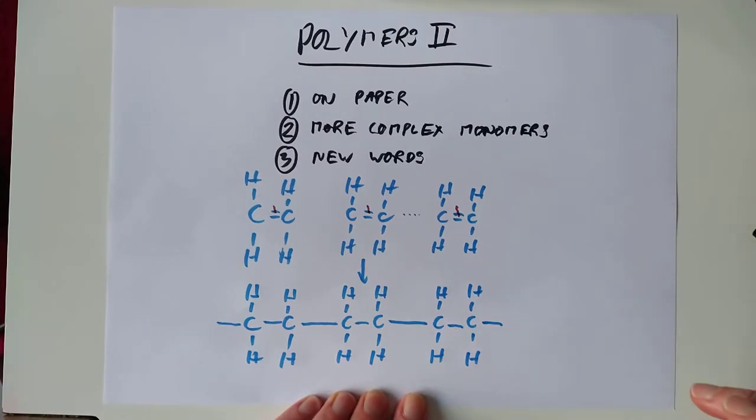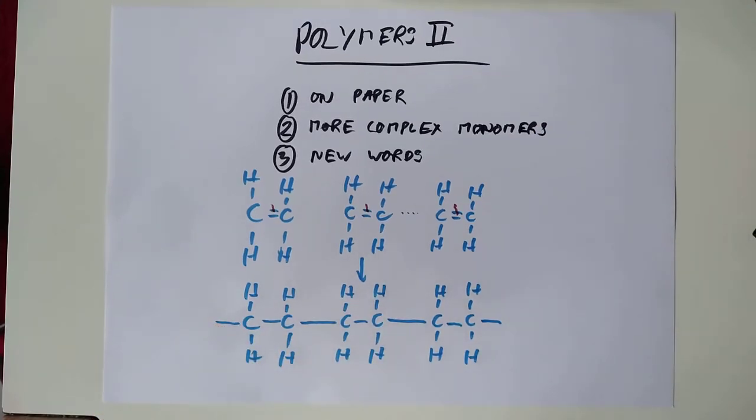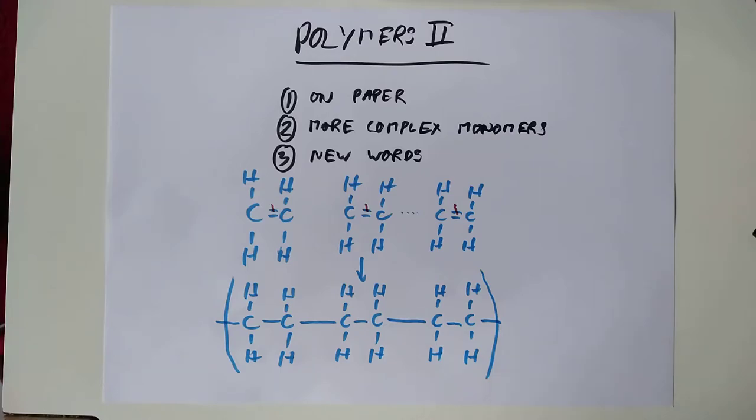So, monomers changing into a polymer by a polymerization reaction. These were the new words from the last video. That's basically how we show it on paper. You show these dangling bonds at the end. Some people like to put a bracket around there and a bracket around there, indicating that it just continues out. You can do that if you like.